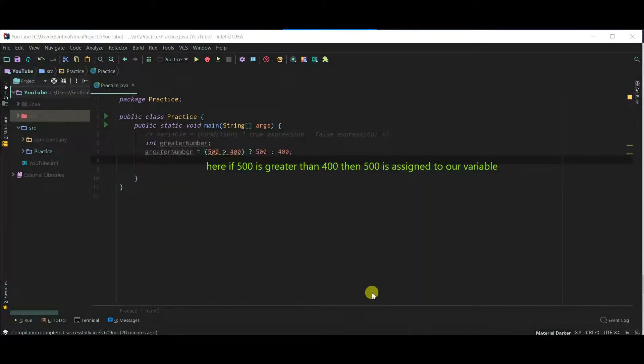Let's understand this by an example. Here, if 500 is greater than 400, then 500 is assigned to our variable.